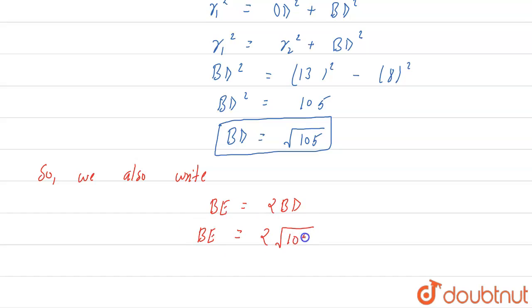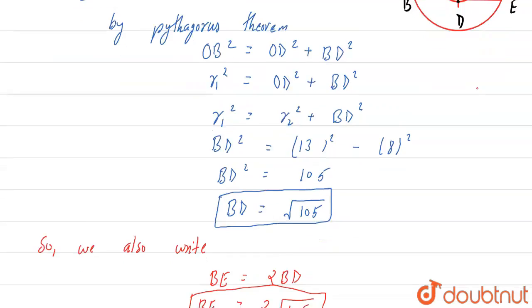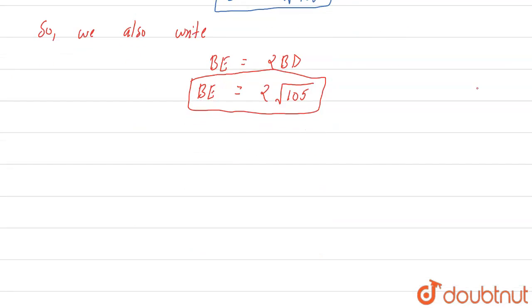So BE equals 2 times √105. Now for further calculation, consider triangles BOD and BAE.